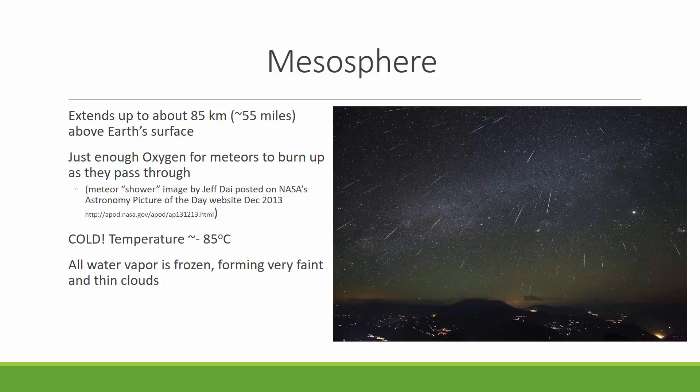The mesosphere is the next layer up, extending to about 55 miles or 85 kilometers above Earth's surface. There's not much in the mesosphere, but it does have just enough oxygen that meteors can burn up as they pass through. That's where you see meteor showers — sometimes called shooting stars. It is very cold in the mesosphere. All the water vapor there is frozen, so sometimes you'll see a very faint, thin cloud layer way up high in the sky — that's the water vapor in the mesosphere.